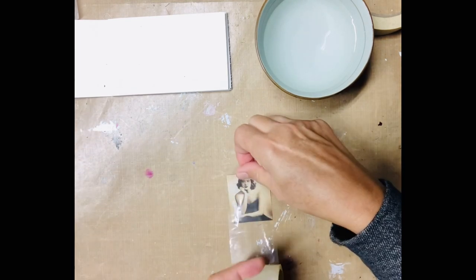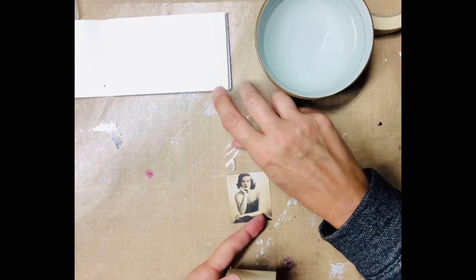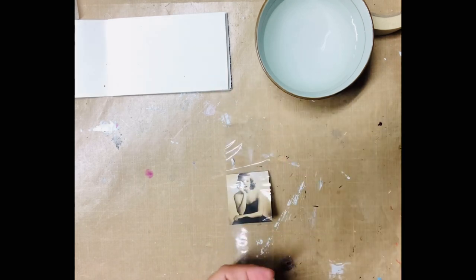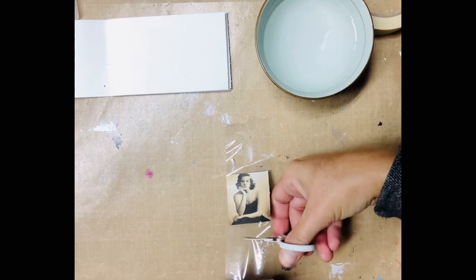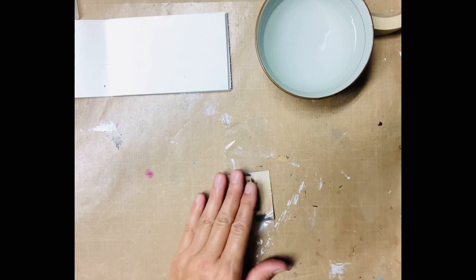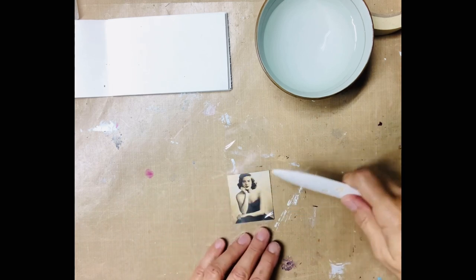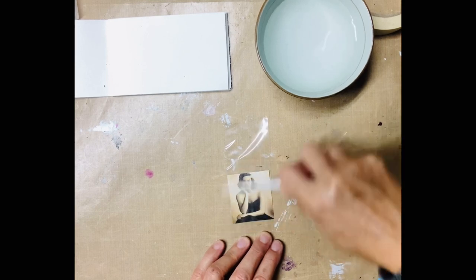So cut out your image from the magazine and place a piece of tape on it like you see here. Now you want to grab a burnisher or a credit card and burnish it so the tape is really sticky. Like it's really stuck on there.